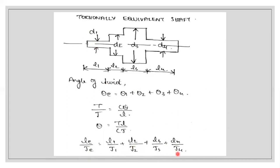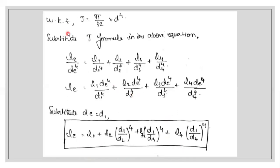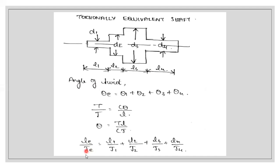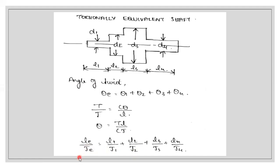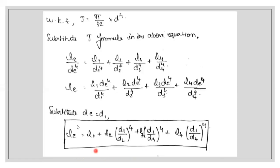Next, we know the polar moment of inertia formula is J equals π/32 times d to the power 4. We replace Je with π/32 times de to the power 4, and similarly π/32 times d1 to the power 4, π/32 times d2 to the power 4, and so on. Taking π/32 outside on both sides, we cancel it. After substituting, we get: Le divided by de to the power 4 equals L1/d1⁴ plus L2/d2⁴ plus L3/d3⁴ plus L4/d4⁴.